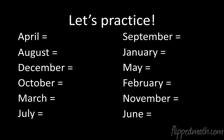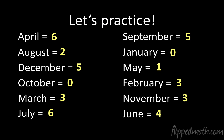Let's do some quick practice. I'll say the month and you say it out loud. April — six. August — two U's, two. December — five golden rings, five. October — starts with a zero. March — third month, three. July — June-July switch, six. September — starts with a five. January — lowest month, zero. May — Mayday, May 1st, one. February — friends with March, three. November — three syllables, three. June — like the July thing, so four. If you don't have these numbers memorized, you will not be able to do this.